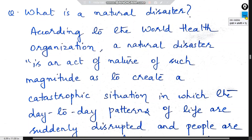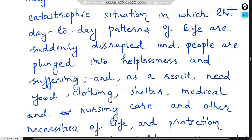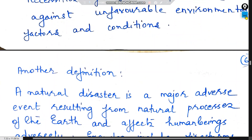What is a natural disaster? According to the World Health Organization (WHO), a natural disaster is an act of nature of such magnitude as to create a catastrophic situation in which the day-to-day patterns of life are suddenly disrupted and people are plunged into helplessness and suffering, and as a result need food, clothing, shelter, medical and nursing care, and other necessities of life and protection against unfavorable environmental factors and conditions.